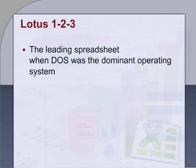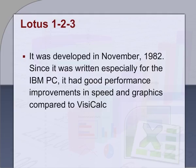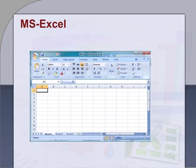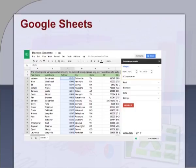Third, LOTUS 1-2-3 was the leading spreadsheet when DOS was the dominant operating system. It was developed in November 1982. Since it was written especially for IBM PCs, it had good performance improvements in speed and graphics compared to VisiCalc. Nowadays, commonly used spreadsheet programs are MS Excel, Google Sheets, and many more. We will see MS Excel in detail in the next session.